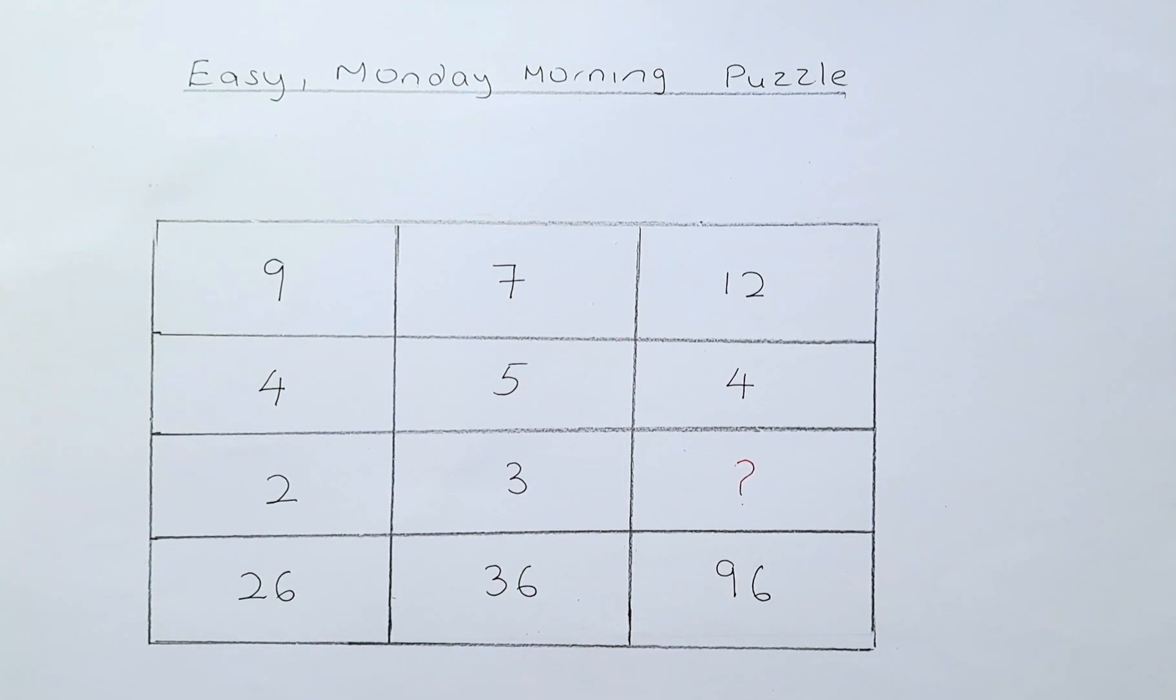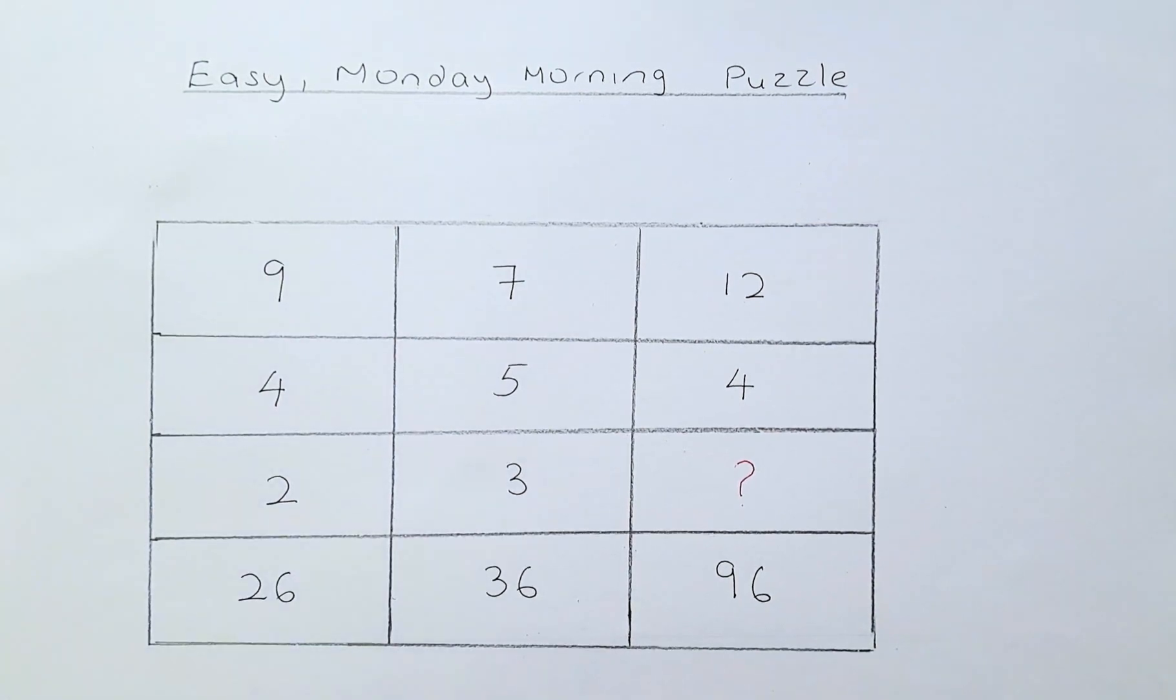Similarly, in the second column, 7 plus 5 is 12. 12 multiplied by 3 will give you 36.